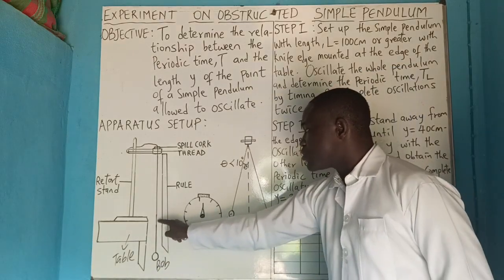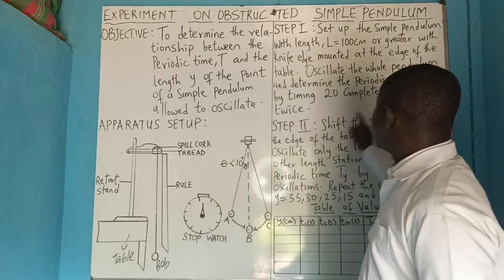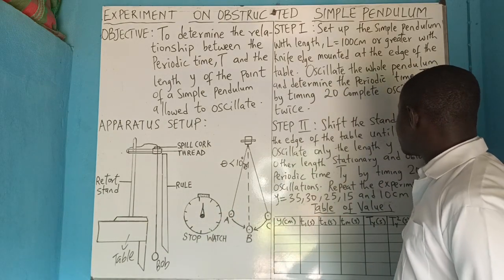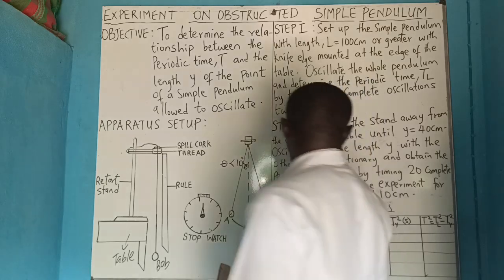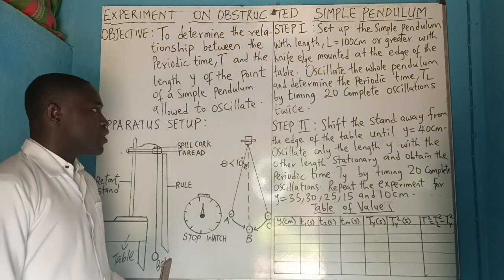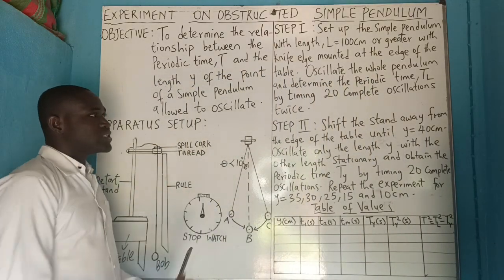And that distance from here to here, for the first one, will be 40 cm. It has to be 40 cm. How do you get the 40 cm?